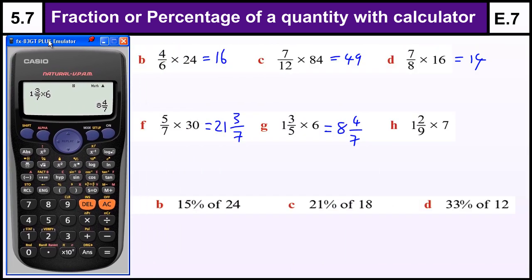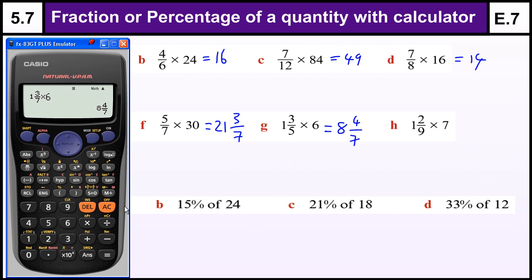And the last one, which you can't see, is over there. 1 and 2 over 9, times by 7. And change it to a mixed number. We get 8 and 5 ninths.